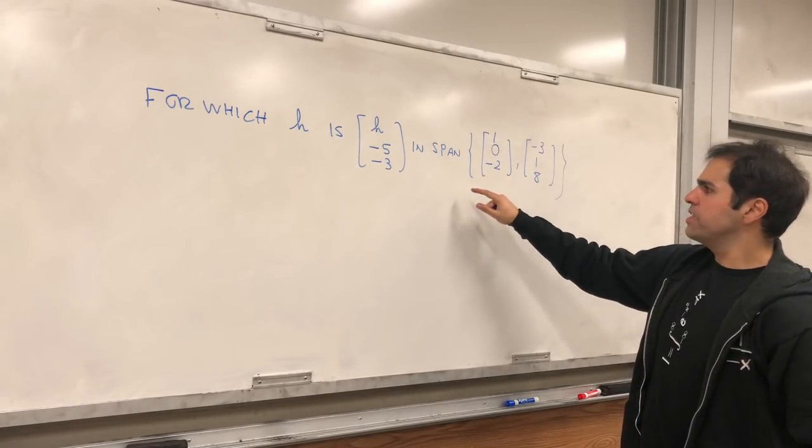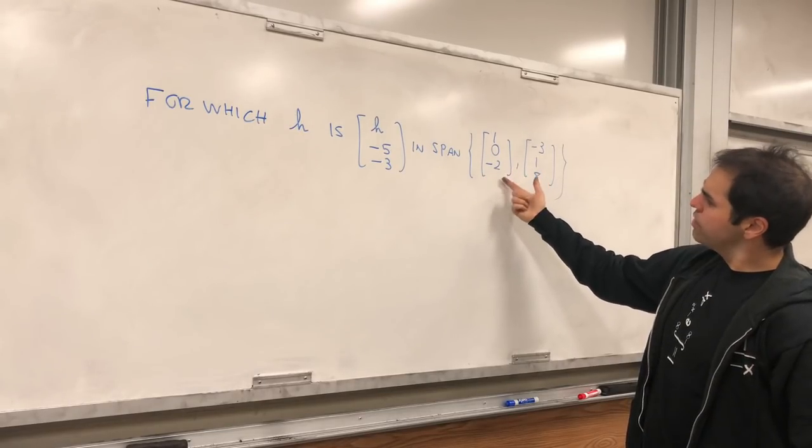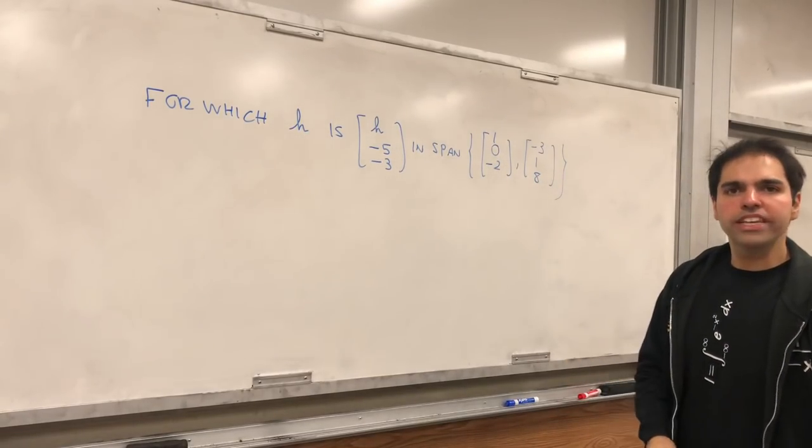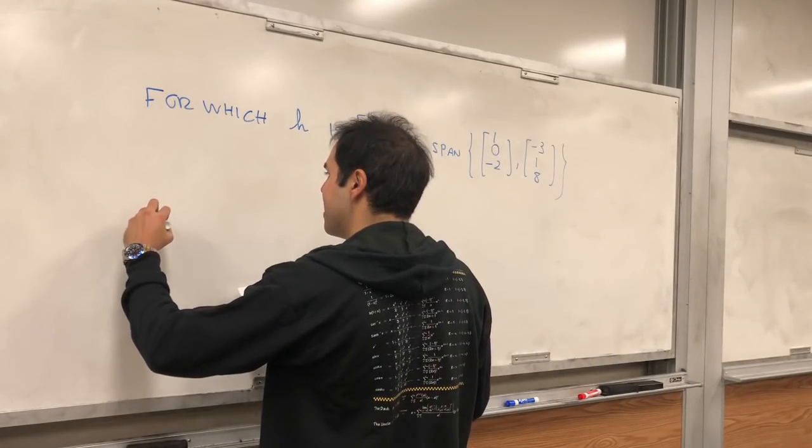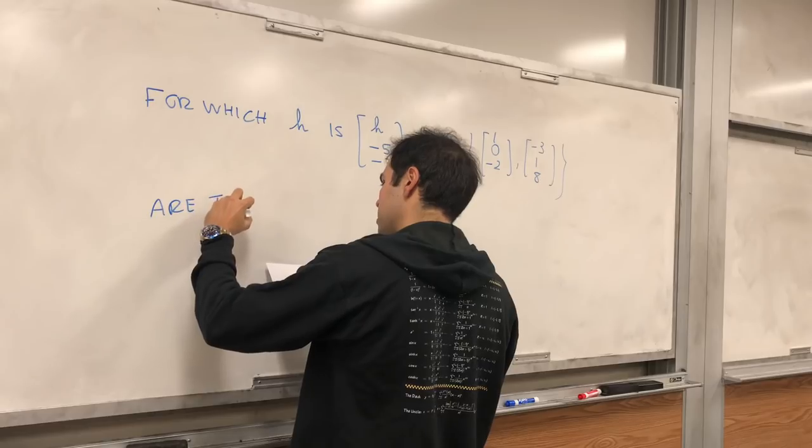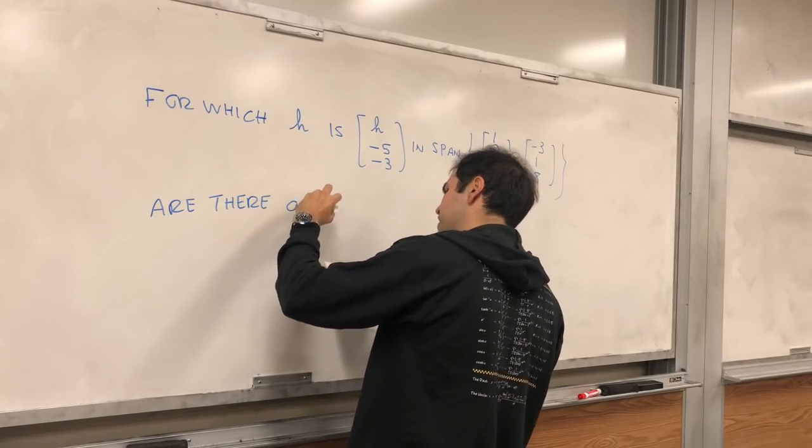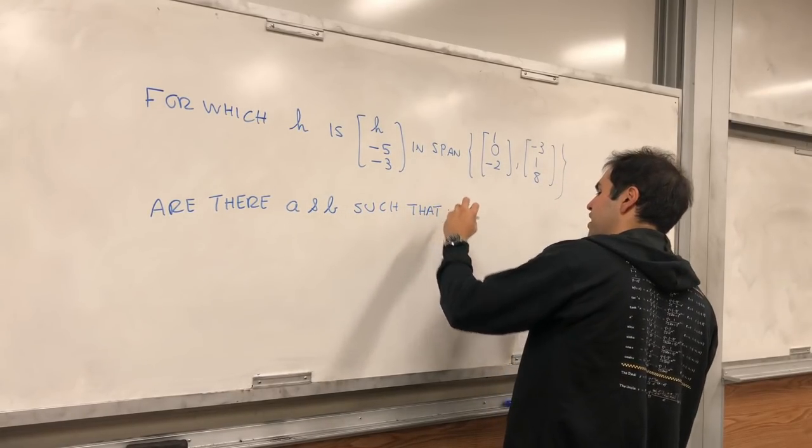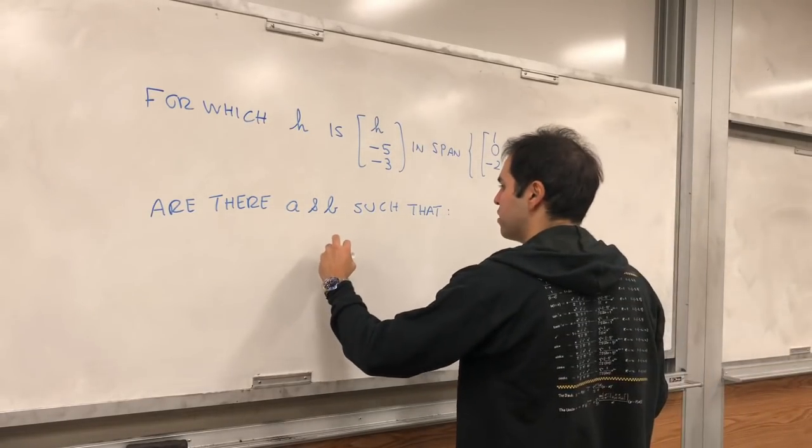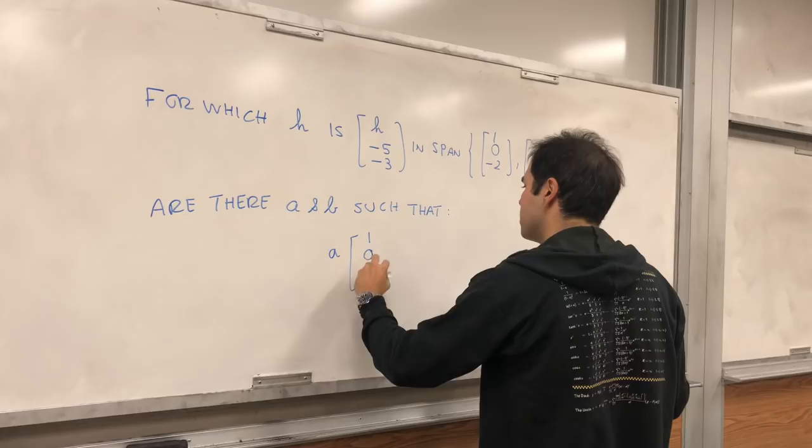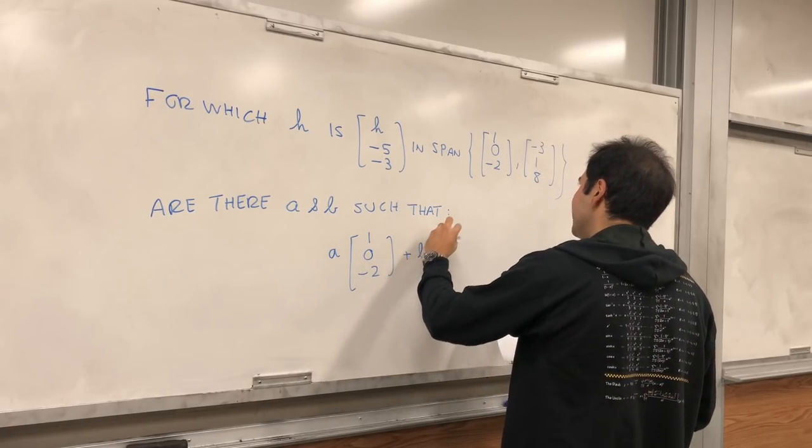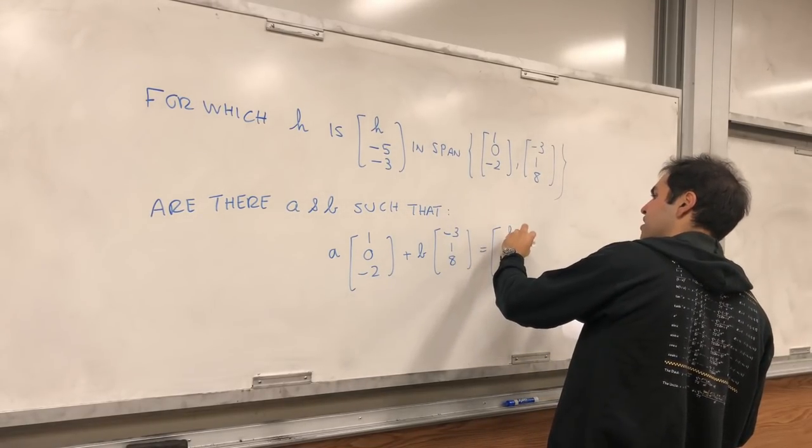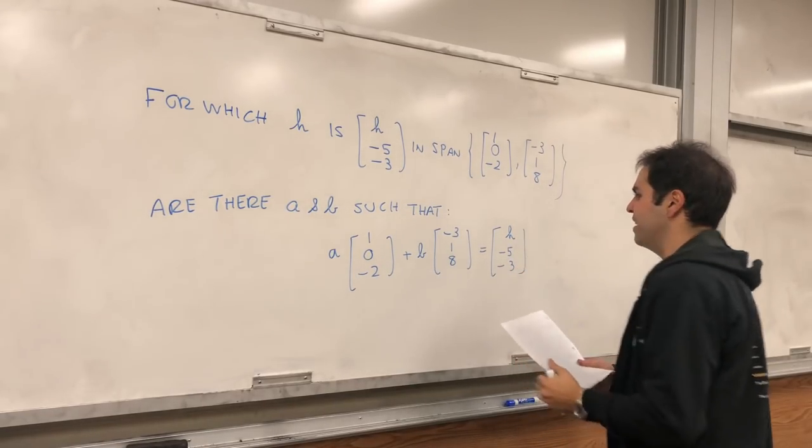In other words, the set of expressions of the form A times the first vector plus B times the second vector, where A and B can be anything. So the question is then, are there A and B such that if you take a linear combination of those two vectors, so A times [1, 0, -2] plus B times [-3, 1, 8] equals to our vector here, [h, -5, -3].